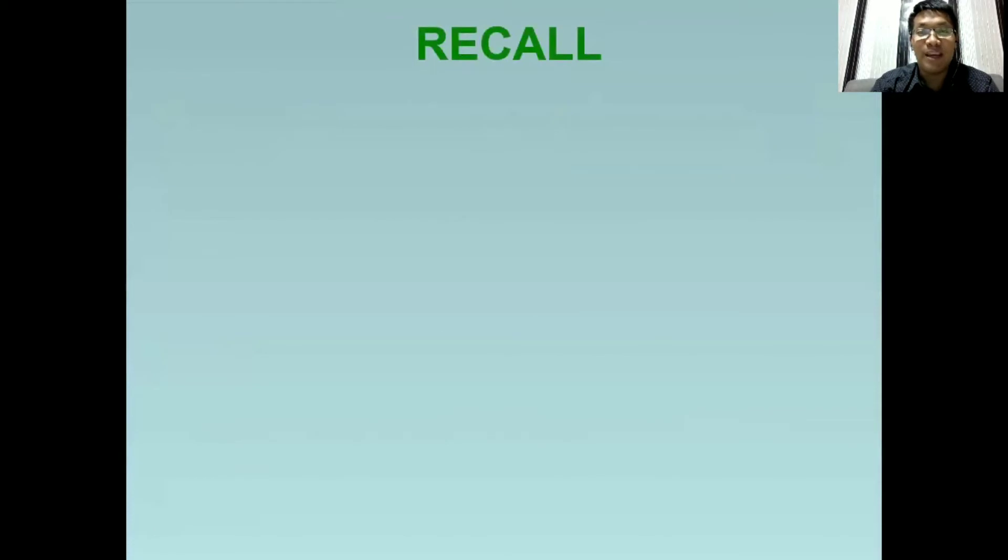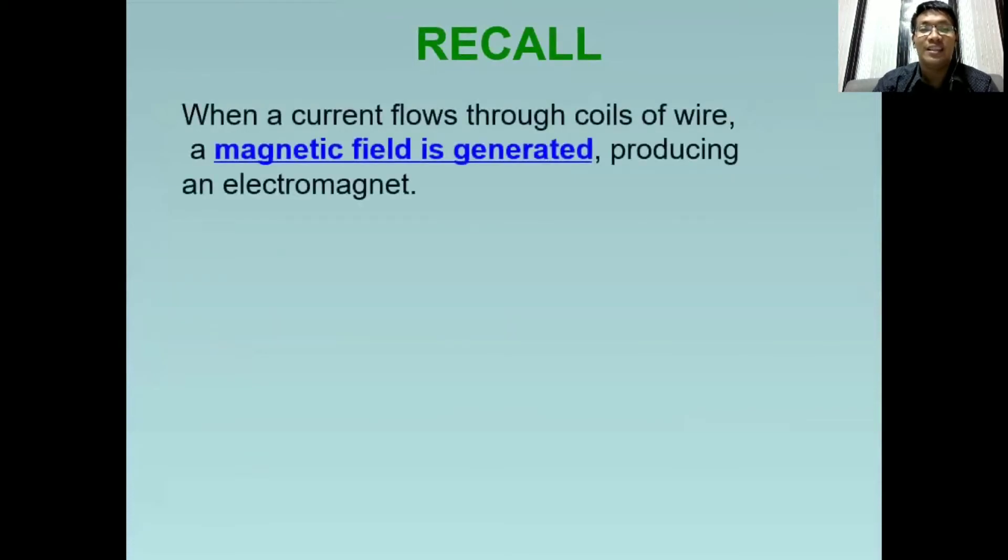Let's have a short recall. When a current flows through coils of wire, a magnetic field is generated, producing an electromagnet.